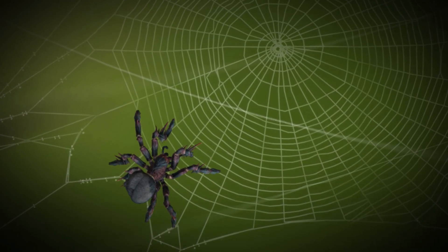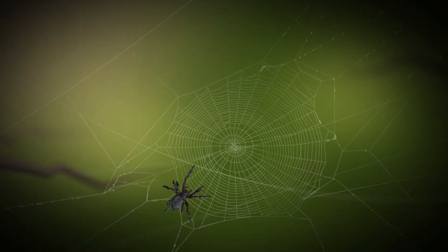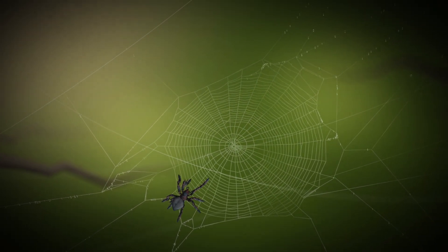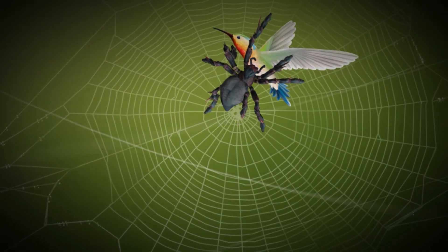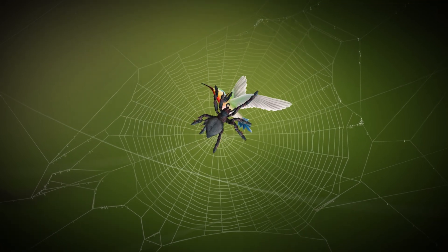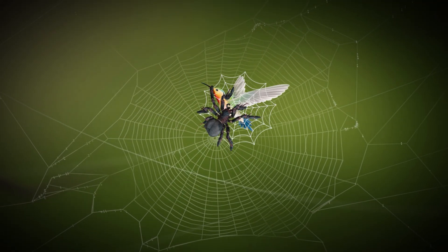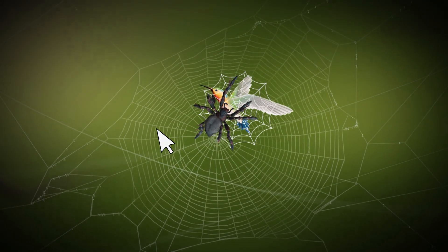the spider will sit and wait patiently for a bird to fly into its trap. When a bird does get stuck, the spider will quickly run over and bite it to immobilize it. That's not all. The spider will then wrap the bird up in more webbing, making sure it's completely immobilized.